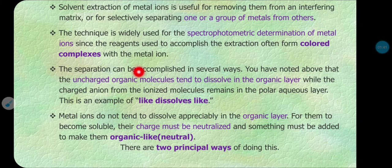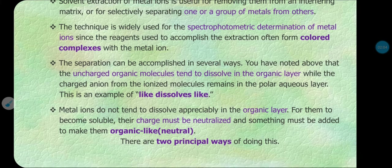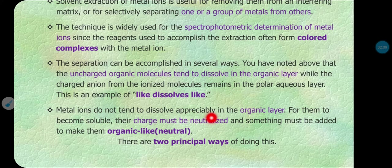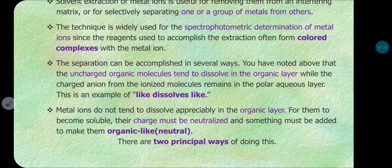The separation can be accomplished in several ways. Note that uncharged organic molecules tend to dissolve in the organic layer — the general principle 'like dissolves like' — but metal ions are charged. In order to neutralize them using simple chemistry, the metal ions do not tend to dissolve appreciably in the organic layer. For the metal ion to become soluble in the organic layer, its charge must be neutralized by adding organic reagents or organic compounds, forming an ion complex or chelate.